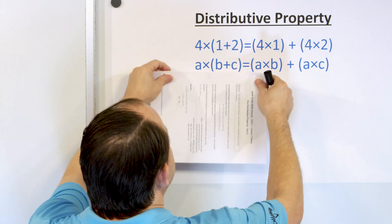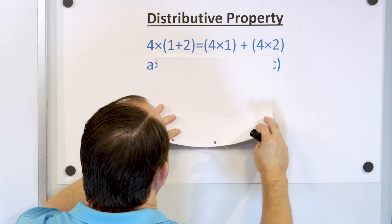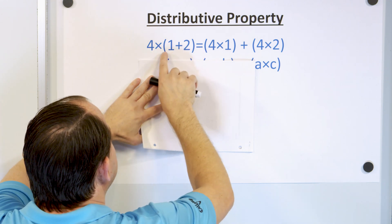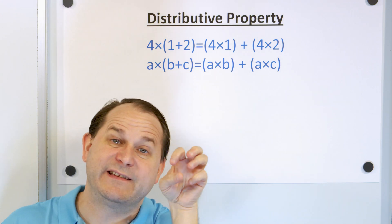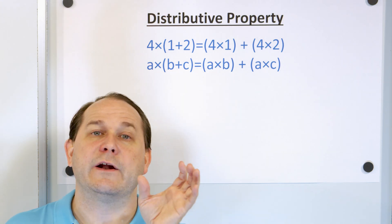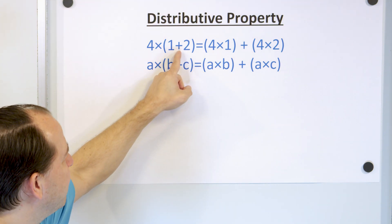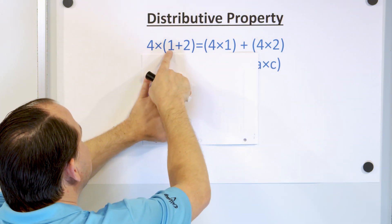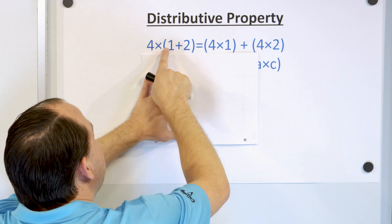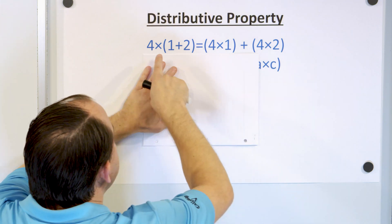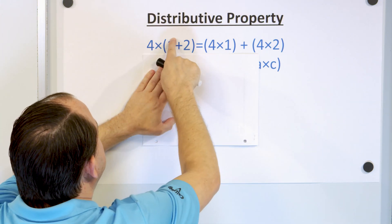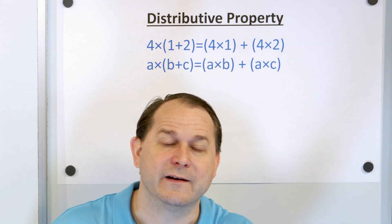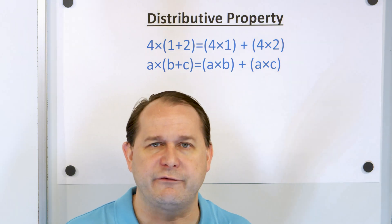So here it is. I want you to ignore all the letters down below — just don't even look at that stuff. What we have above is 4 times, in parentheses, 1 plus 2. The distributive property applies when you have something multiplied times a parentheses, and on the inside you could have either a plus or a minus — here we have a plus. What we're doing is taking the 4 and multiplying by the 1, and then taking the 4 and multiplying by the 2. You can think of the 4 as going in and bombing the terms on the inside. The 4 is being distributed inside the parentheses — that's why it's called the distributive property.